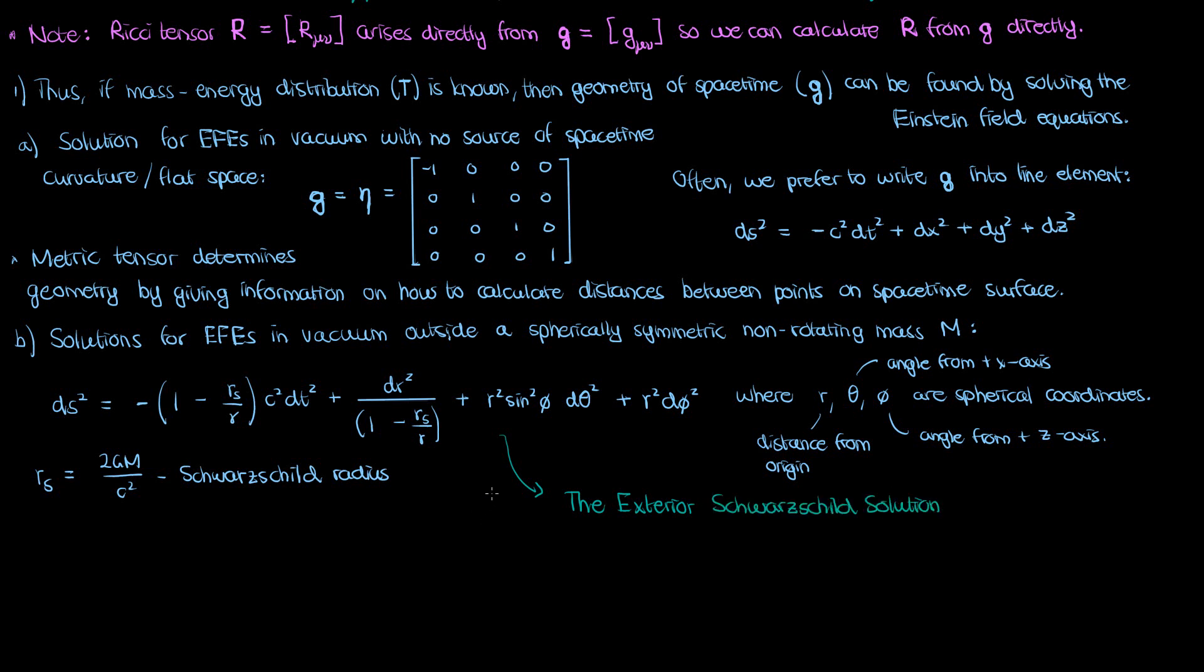It describes the geometry outside a spherically symmetric, non-rotating mass. For the part inside the mass, you'd need the interior Schwarzschild solution, which doesn't really come up that much, but exists nonetheless.